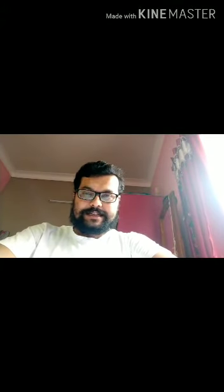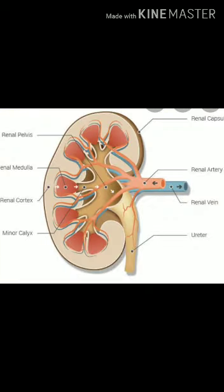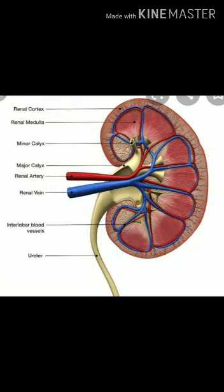In class 10 biology, we will see the structure of the kidney and how it actually helps. First, we start with the role of the urinary bladder in excretion — that is a muscular sac-like urinary bladder located in the pelvic cavity, which acts as a temporary storehouse of urine.